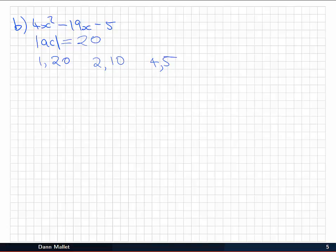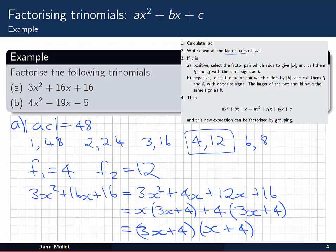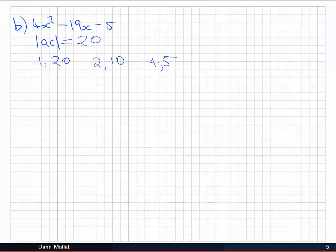In this example, c is -5, which is negative, so we're going to follow the 3b branch. With a negative we select the factor pair which differs by the absolute value of b. The absolute value of b is 19, so the factor pair which differs by 19 is 1 and 20.